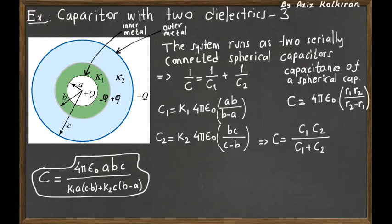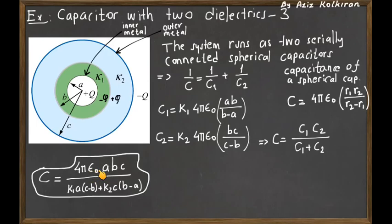The equivalent capacitance for the two series capacitors is C1 times C2 divided by C1 plus C2. If you simplify this expression, the end result is 4π ε₀ times a times b times c, divided by k1 times a times (c minus b) plus k2 times c times (b minus a).